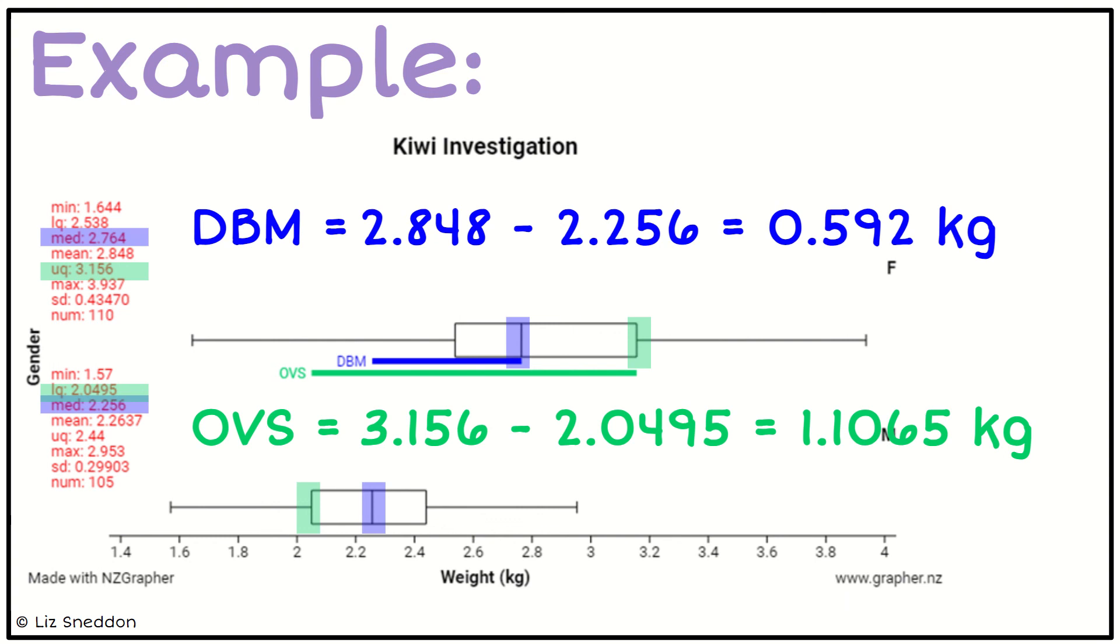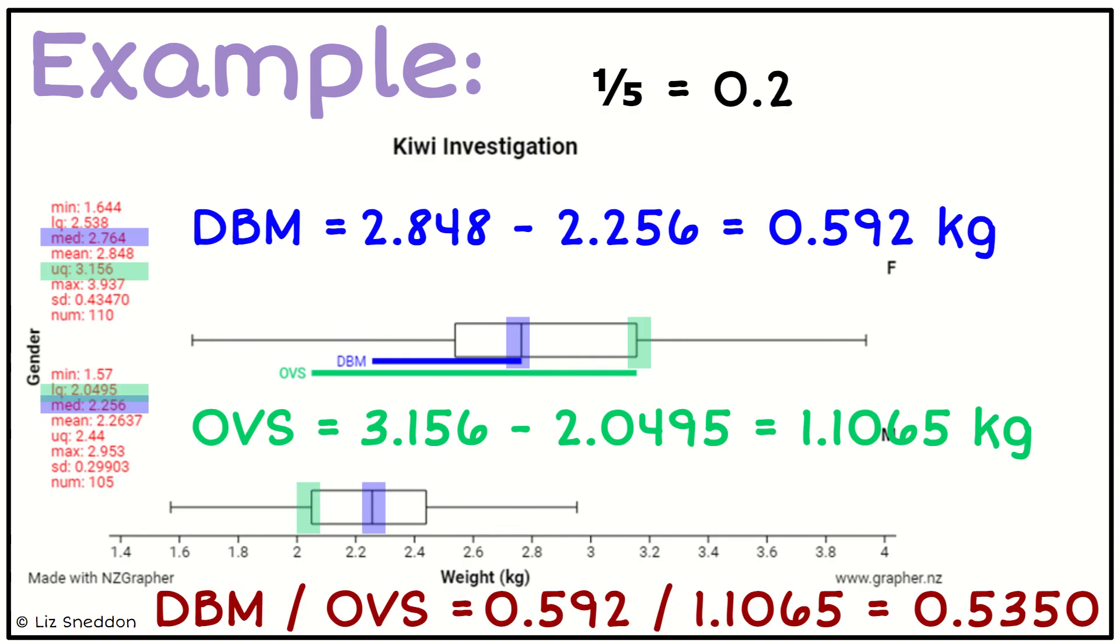A third method that we can use is a comparison and ratio, so I can do the DBM divided by the OVS. When I do that, I get a ratio of 0.5350. Now I'm going to compare that value to one-fifth. When I do one-fifth as a decimal, that's 0.2. I'm going to look to see is that value bigger or smaller than the one-fifth value. It's bigger than one-fifth, so therefore I have enough evidence to make the call. There's three different ways of finding the evidence, and you can choose any one that you prefer.